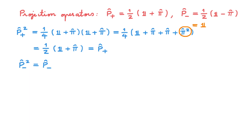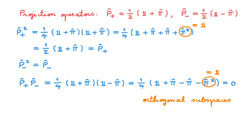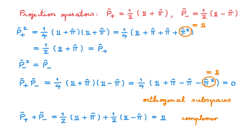Now we know P plus and P minus are projection operators. The next thing is to check they project onto orthogonal subspaces. Considering the product P plus times P minus, inserting their definitions and multiplying through gives four terms; using pi squared equals the identity, we end up with zero, confirming that the two operators project onto orthogonal subspaces. The final feature we need is that they project onto complementary subspaces — meaning their projections span the full state space. The sum of P plus and P minus gives the identity, confirming they project onto complementary subspaces.